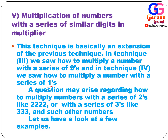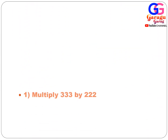The question may arise: how do we multiply numbers with a series of twos like 2222, or a series of threes like 333333? The key idea is that we can write 22 as 2 × 11, or 222 as 2 × 111. So we convert the repeated-digit multiplier into a single digit times a series of ones, and then apply the same ones technique.